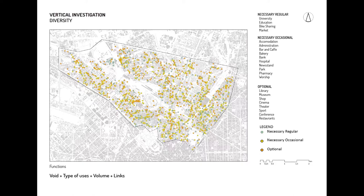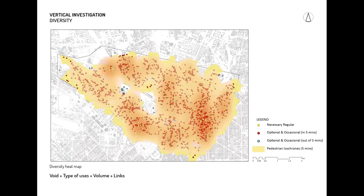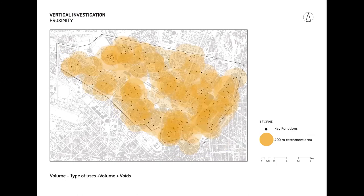Diversity is mainly related to functions. We have three different classes: necessary, regular, occasional, and optional — a classification based on Jan Gehl's classification. Here is the heat map for diversity showing the distribution of functions. Since it is also overlapped with pedestrian isochrones, for five minutes we can easily see which functions are not well accessible by foot. The last key category is proximity, which shows the distribution of key functions and how the area is covered. The comfortable distance to these functions is 400 meters, which is five minutes by foot, and key functions include hospitals and educational facilities.